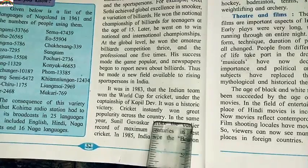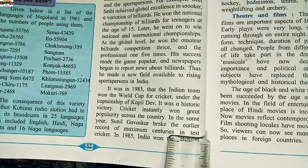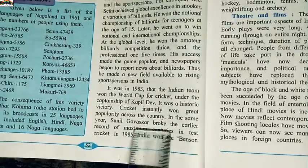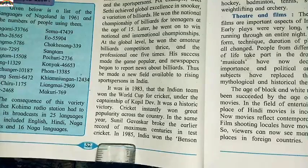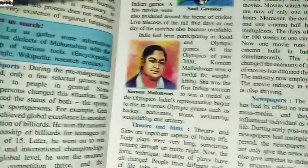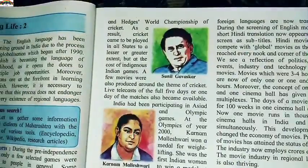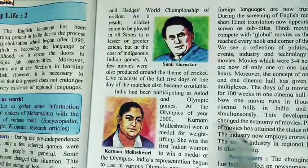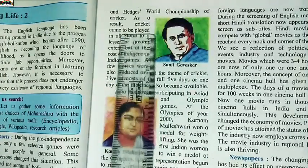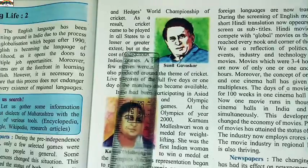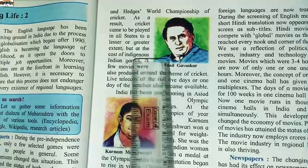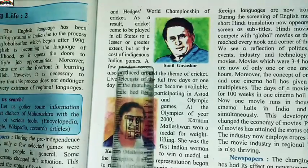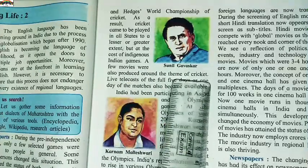It was a historic victory. Cricket instantly won great popularity across the country. In the same year, Sunil Gavaskar broke the earlier record of maximum centuries in Test cricket. In 1985, India won the Benson and Hedges World Championship of Cricket. As a result, cricket came to be played in all states to a lesser or greater extent, but at the cost of indigenous Indian games.